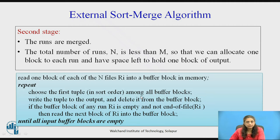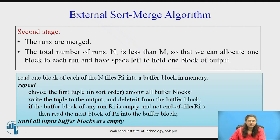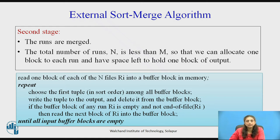In the second stage, bring the runs into main memory, compare the tuples one by one, and write the smaller (or larger, depending on sort order) value to the output. Read one block of each of the N files generated in stage one, compare the first tuple of every block, and write the appropriate value to output. Once a tuple is written, delete it from the buffer. When the buffer is empty, read the next block of that run. Iterate until all run files are completely read.